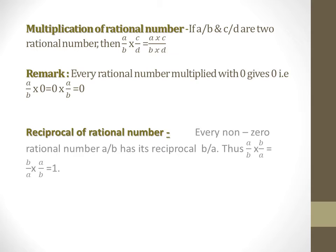Remark: every rational number multiplied with 0 gives 0. That is a/b × 0 or 0 × a/b, you will always get 0. For example, 5 × 0 = 0, or 1/2 × 0 = 0.